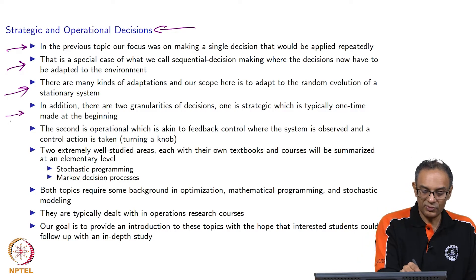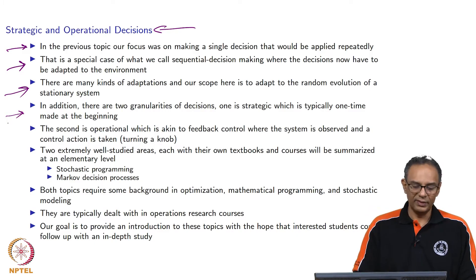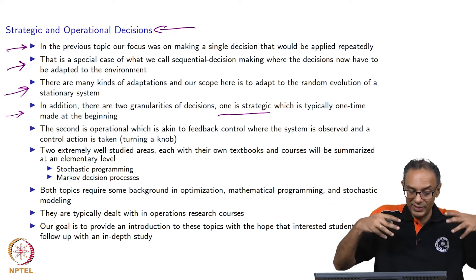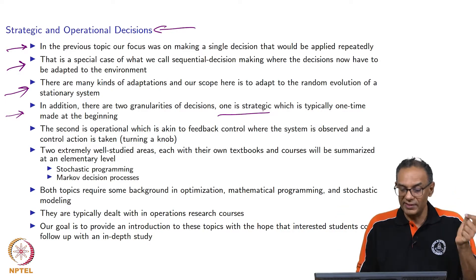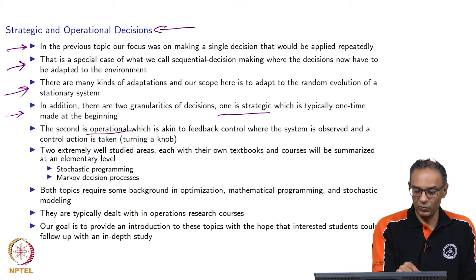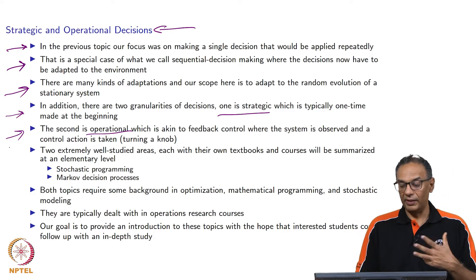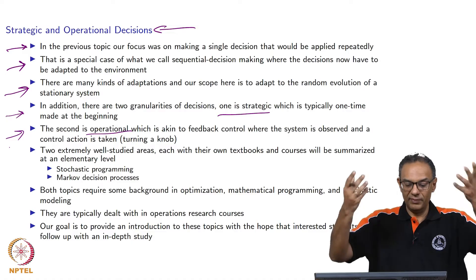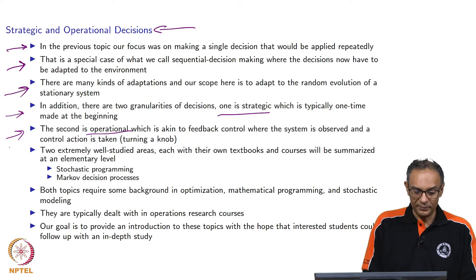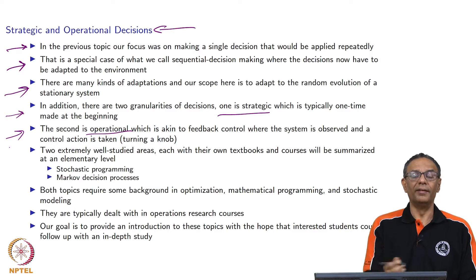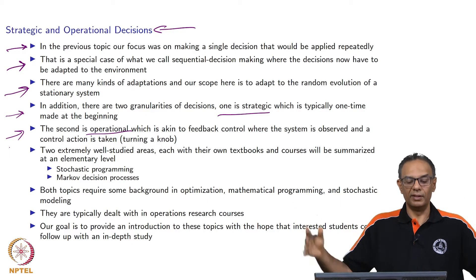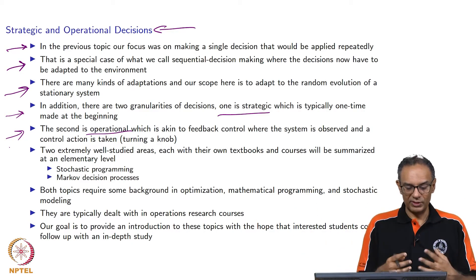There are two granularities of decisions. There are still one-time decisions here, and this is what we call strategic — in some sense this is from topic 2, the one-time decision part. Then there is something called an operational decision, which is like what we call feedback control. We look at something, we get feedback, and then we adjust. So that is kind of the two-stage strategic decision.